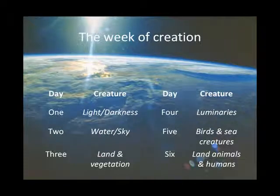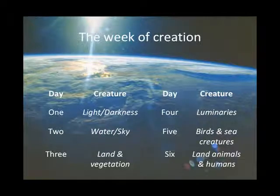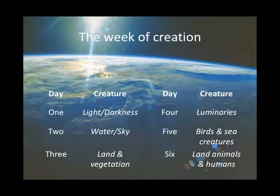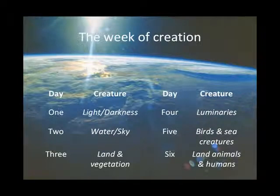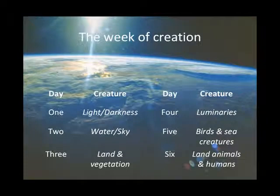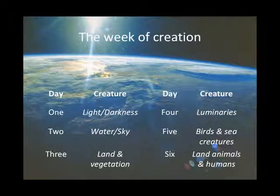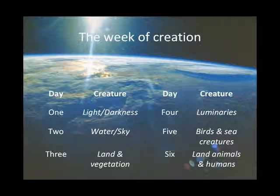What you notice when you do that is that on day one what's created is light, and on day four it's the luminaries; that on day two what's created is the sky and the sea, and on day five it's the birds and the fish and other creatures that live in the sea; and that on day three it's the land, and on day six it's the land creatures, animals and humans. There's a pattern — form and function, or filling — and it's a clue that this chapter is patterned, and when there are patterns, things are going on.